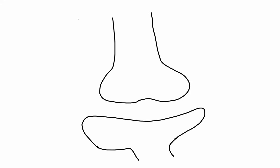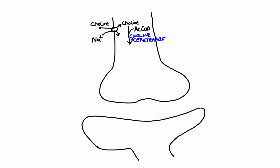Cholinergic neurotransmission can be broken down into six major steps. In the first step, a choline molecule is transported into the neuron by an energy and sodium dependent transport system. Once inside, choline reacts with acetyl-CoA to form acetylcholine. The enzyme responsible for catalyzing this reaction is choline acetyltransferase. In the second step, acetylcholine gets transported into a presynaptic vesicle where it's protected from degradation.